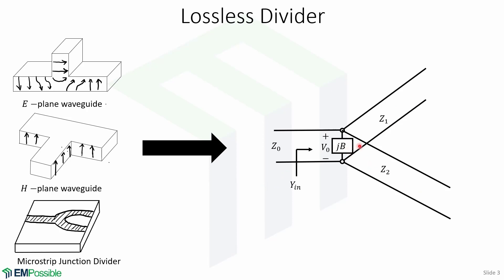There may be fringing fields and higher-order modes associated with the discontinuity at the junction, which can lead to stored energy that can be accounted for by a lumped susceptance B, as shown here.